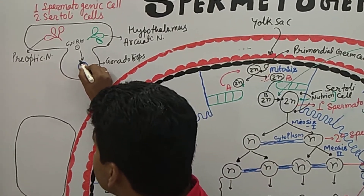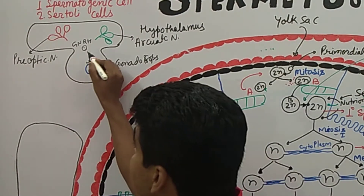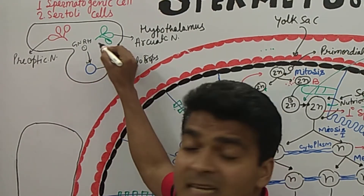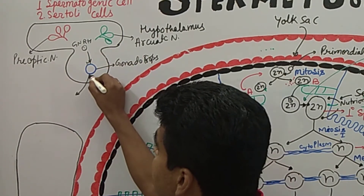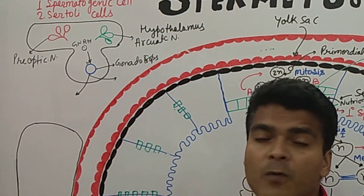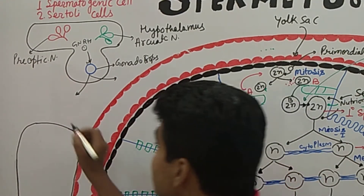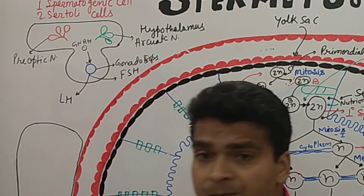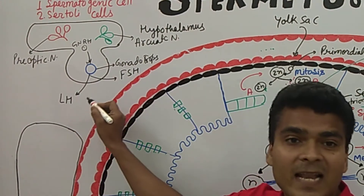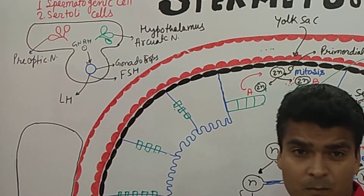GnRH travels to the anterior pituitary. In the anterior pituitary we have gonadotroph cells — shown in blue. GnRH binds to receptors on these gonadotroph cells, causing them to secrete two types of hormones: the first one is Luteinizing Hormone (LH) and the second one is FSH — Follicle Stimulating Hormone.